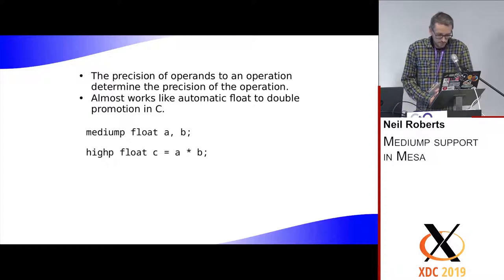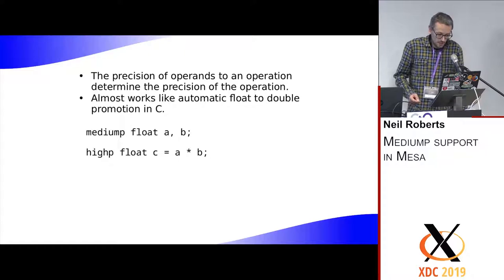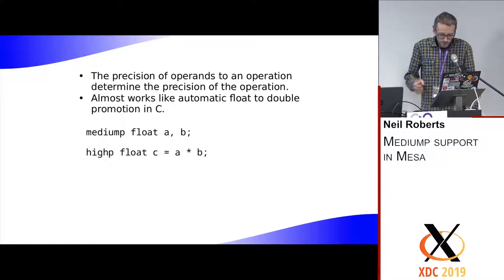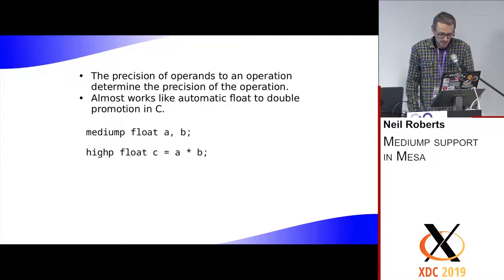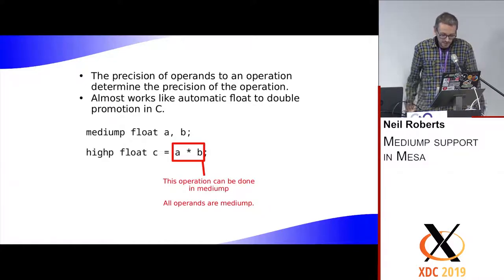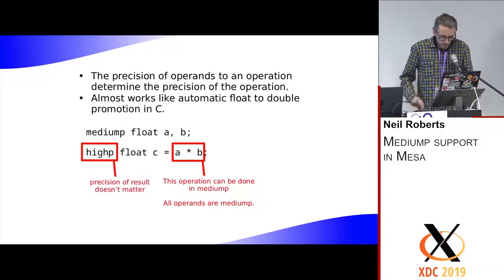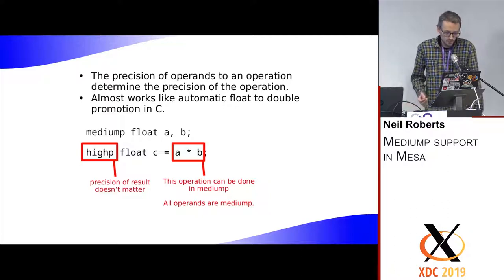When you have an operation in the shader, the precision of the operands determines the precision that the operation can be done in. The precision escalates a bit like C's automatic float-to-double conversion. For example, if A and B are both declared as mediump floats, the A times B operation can be done in mediump. The result being stored into a highp variable doesn't matter — the operation can still be done in mediump.